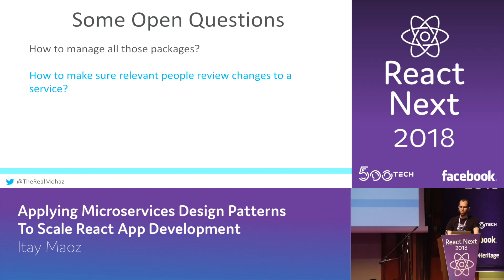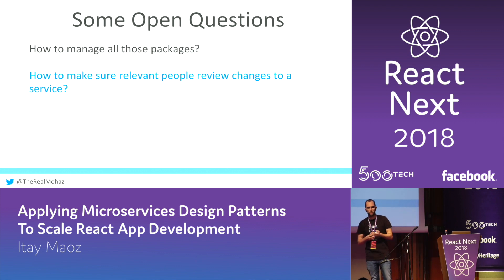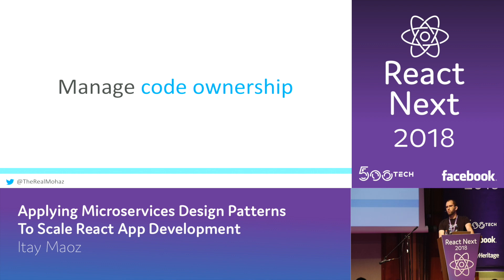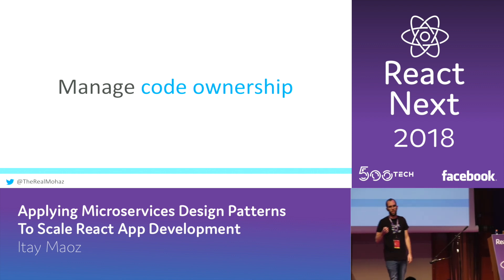Another question is, how do we make sure relevant people review changes to a service? If you're using a monorepo, anyone with permission can change your code and you won't even know about it. This is more of a process question than a technical one, but you need to manage code ownership — it's really important, even if you're not using this architecture. It's important that each piece of code is maintained by someone who knows it, has design goals for it, and keeps it high quality. We use GitHub's code owners feature to do that, which works great for us.